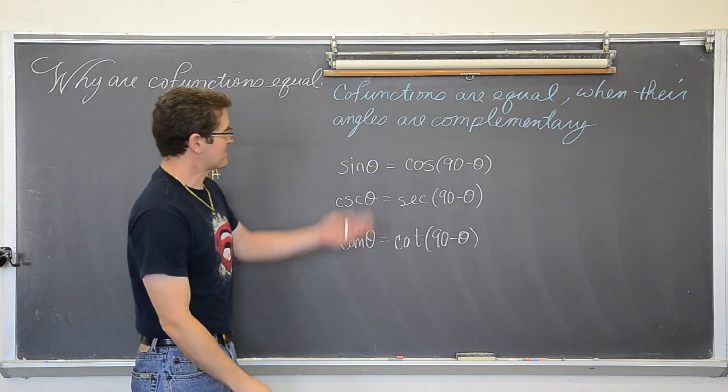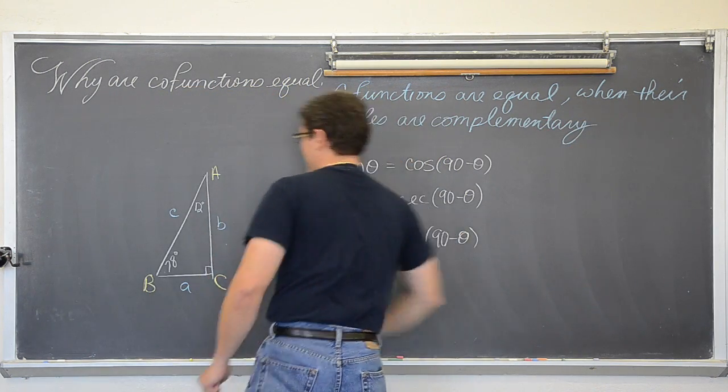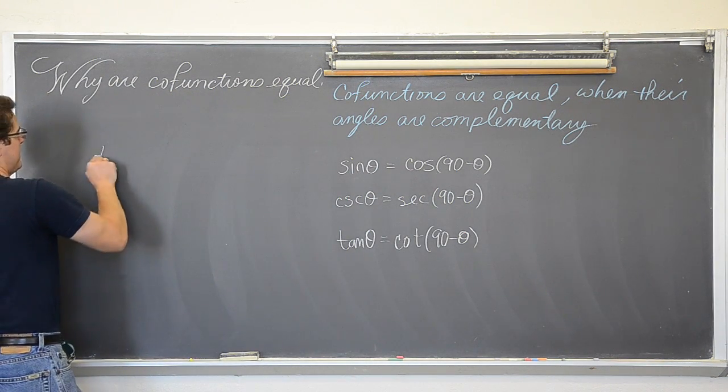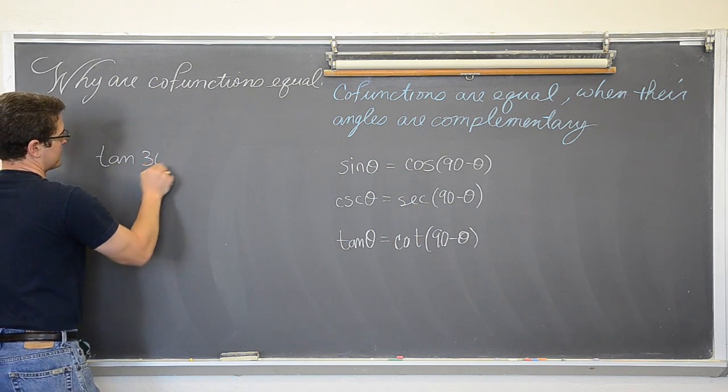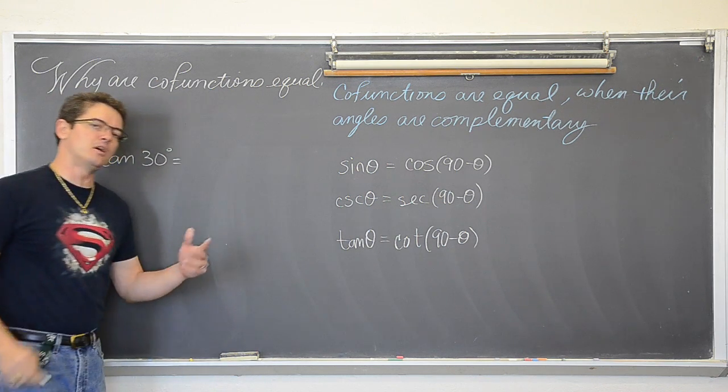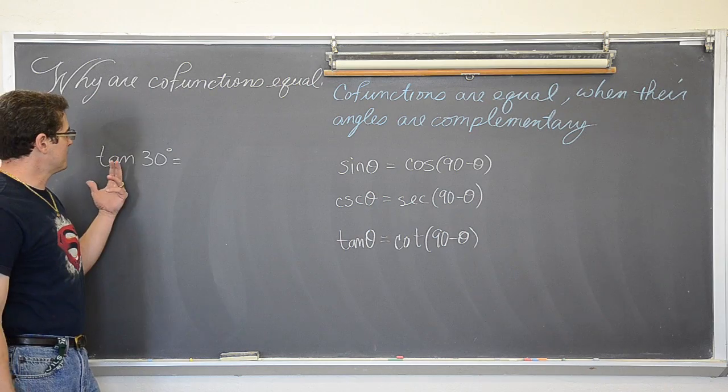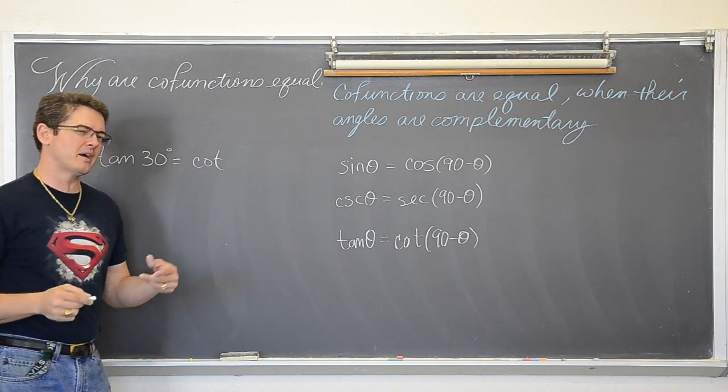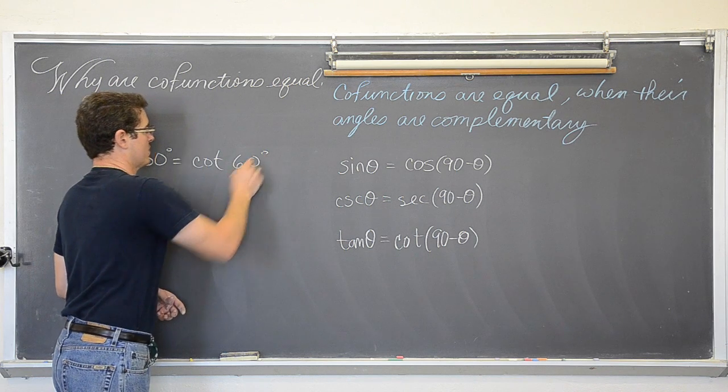Alright? So there you go. That means that if I say, hey, what is equal to the tangent of 30 degrees? Or what is the co-function to the tangent of 30 degrees? Well, that is just the cotangent. What is 90 minus 30? 60 degrees.